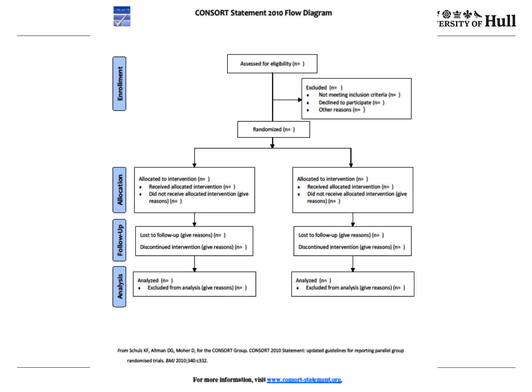The CONSORT flow diagram helps you keep track of everyone who could possibly be in your trial, those who were actually admitted and randomised to the different arms, and those who are in your trial right to the end — keeping track of all who dropped out and those who finally made it. This enables you to do your intention-to-treat analysis, which is now considered a gold standard in reporting clinical trials, albeit with some controversy around it.